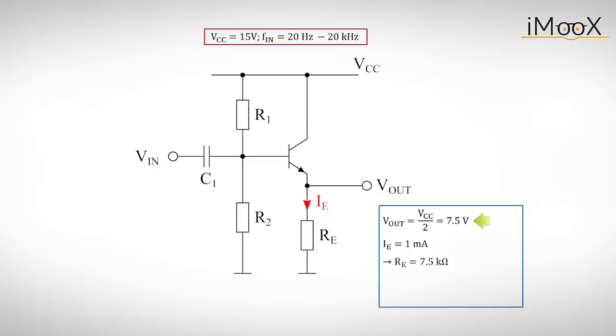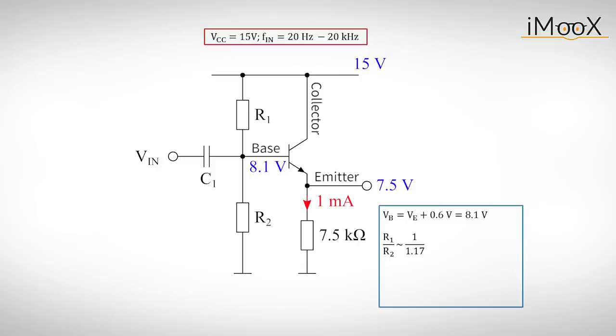Now we choose the output voltage for the largest possible symmetrical swing, which is half of the supply voltage or 7.5 volts. For simplicity, we want to have 1 milliamps flowing at the output, so we need a 7.5k resistor at the emitter. The voltage at the base will automatically be 0.6 volts higher than the one at the emitter, or 8.1 volts.